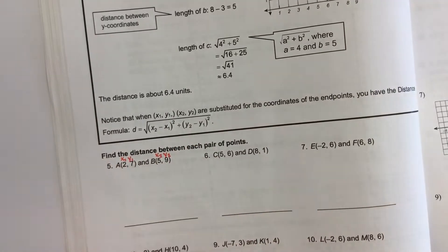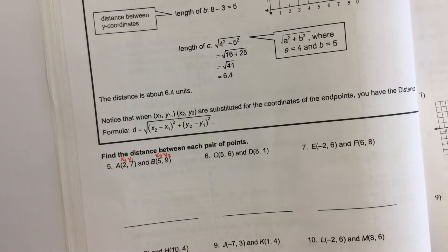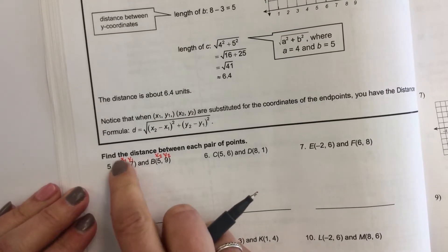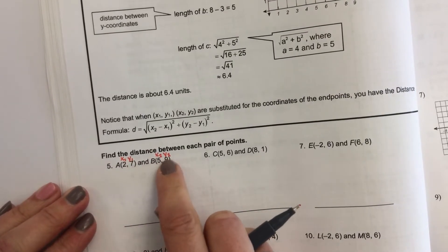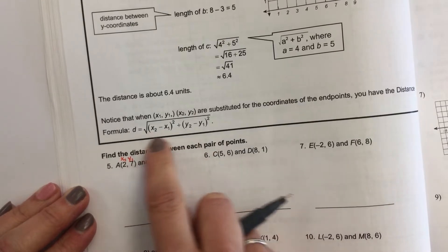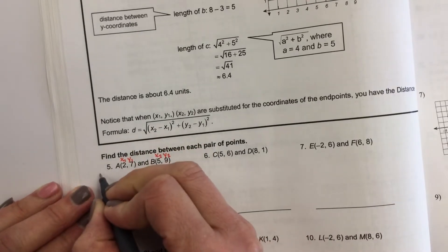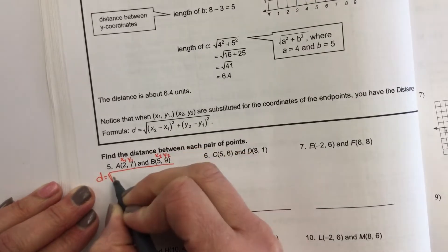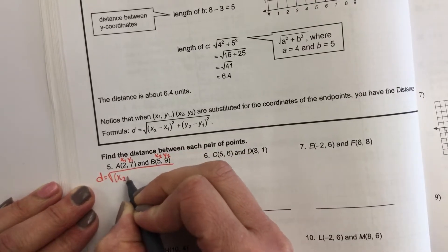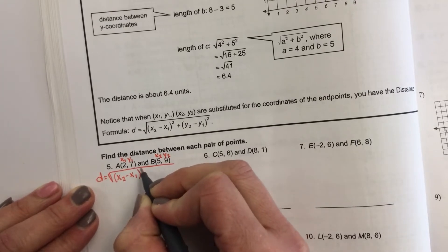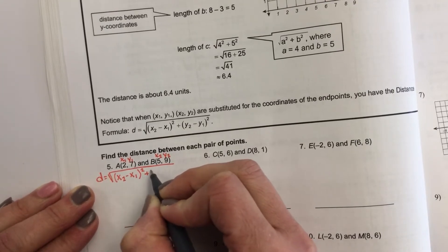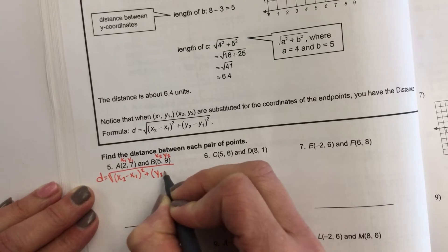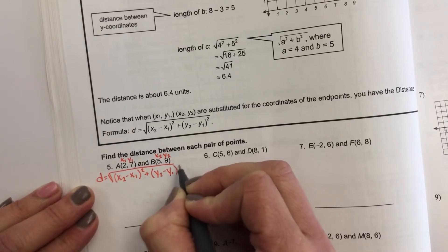Now these 1s and 2s don't mean you're squaring anything. It just means that this is the first set of x and y's, and this is the second set. So I'm going to write our distance formula out. It's the square root of: (x2 minus x1) squared plus (y2 minus y1) squared.